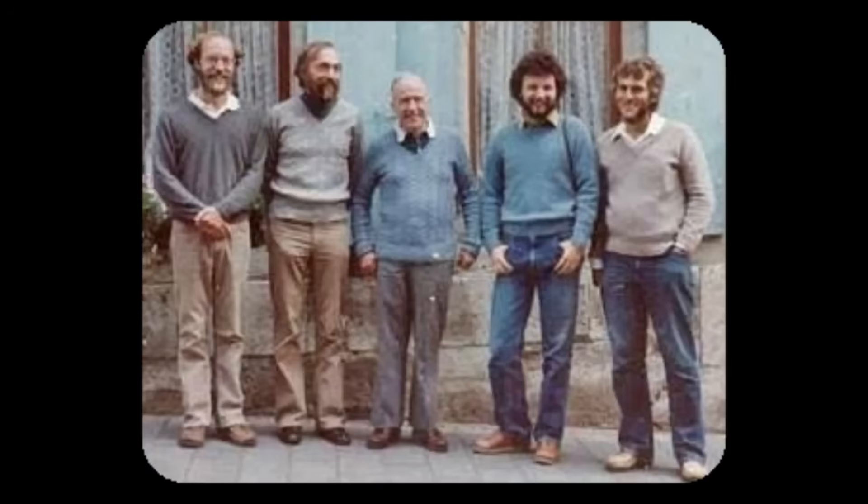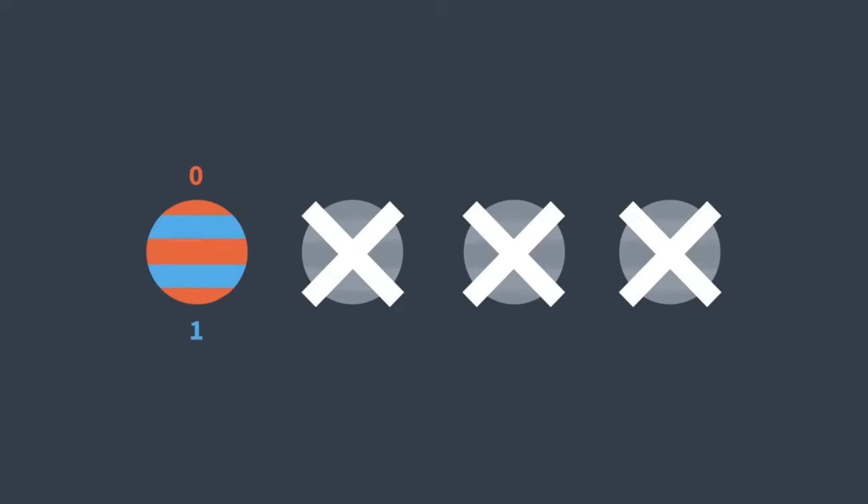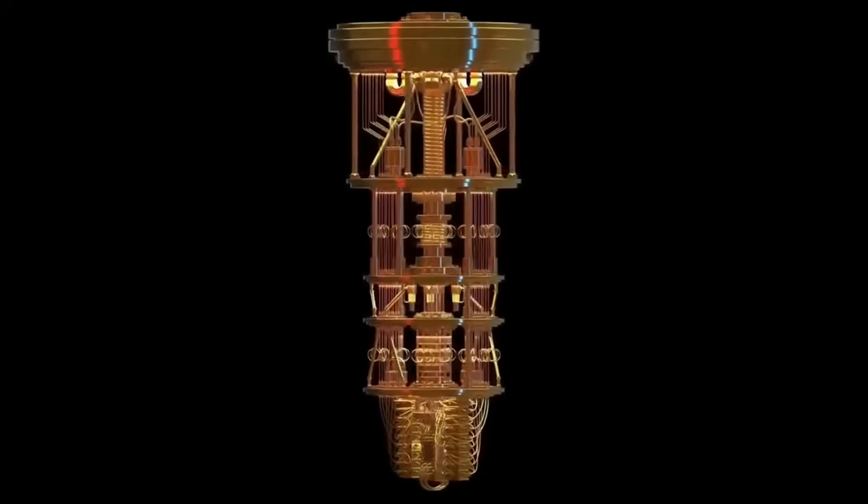In 1982, physicists Wooters and Zurek proved the no-cloning theorem, a fundamental law showing quantum information cannot be copied perfectly. This isn't just a technical limitation, it's a profound truth about the nature of reality itself. Quantum computing scientist Scott Aronson puts it brilliantly: quantum information doesn't want to be free, it wants to be private.